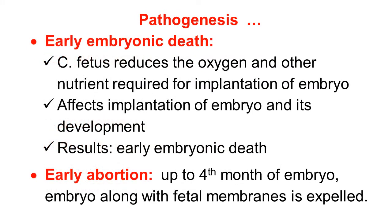The organism also affects fertilization of ovum and sperm. The second effect is early embryonic death — if fertilization does occur, the organism causes early embryonic death. Campylobacter fetus reduces the oxygen and other nutrients required for implantation of the embryo. The embryo requires oxygen and nutrients for implantation, which are depleted by the organism, so it affects implantation and development. The end result is early embryonic death because the embryo is unable to implant.